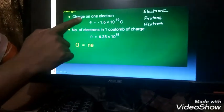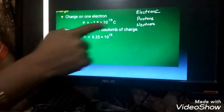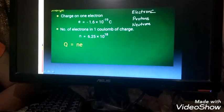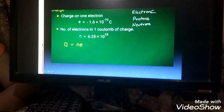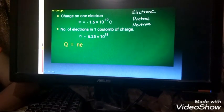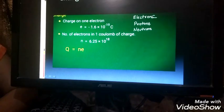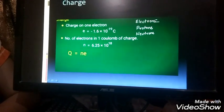And the charge on one proton is equal to plus 1.6 into 10 to the power minus 19 Coulomb. Now I said that electricity is the presence or the flow of charge.